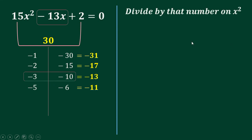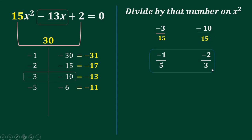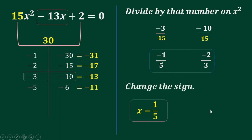Divide by 15 and reduce: negative 3 over 15 is negative 1 over 5, and negative 10 over 15 is negative 2 over 3. Then change the sign: so x equals positive 1 over 5 and x equals positive 2 over 3. These are the roots of this quadratic equation.